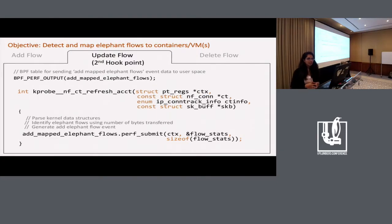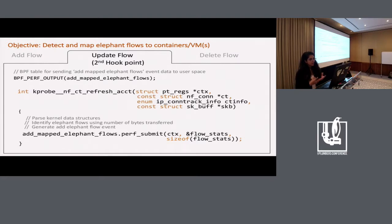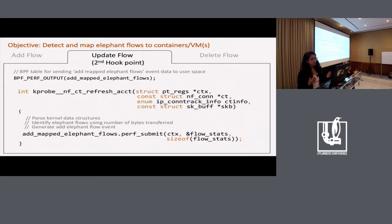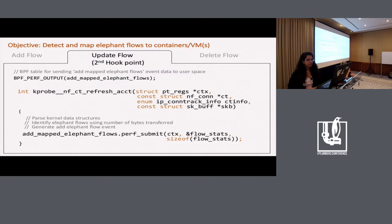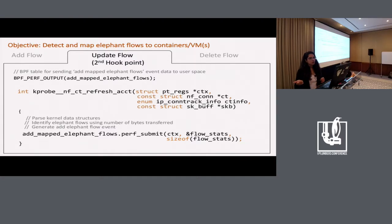The second hook point executes when flow statistics are updated — we trace calls to the conntrack function that does accounting. In this function, we parse kernel data structures: from the SKB data structure we parse the interface name, and from the conntrack functions we get the zone identifier. Based on user-defined thresholds for flow duration and bytes consumed, this routine determines if a flow is an elephant flow. Once detected, it marks the elephant flow flag in the flow stats structure and generates an event to user space using the add-mapped-elephant-flows BPF table.